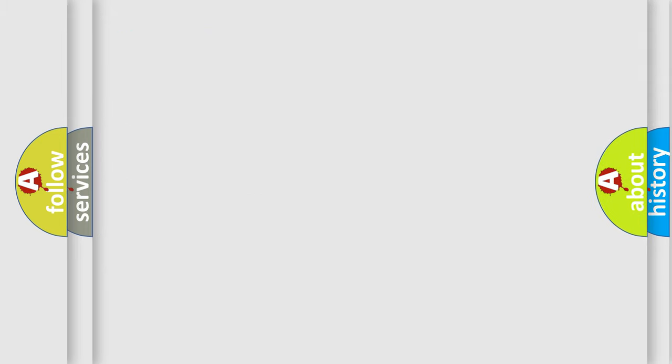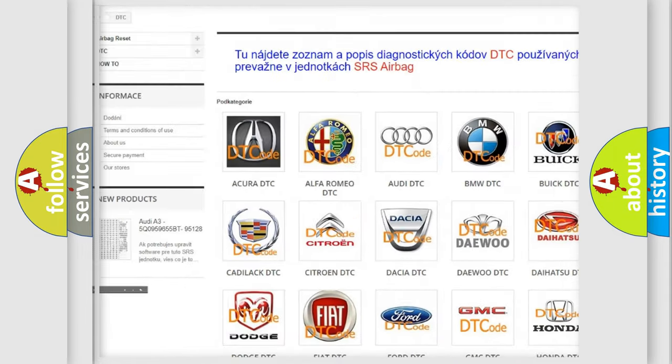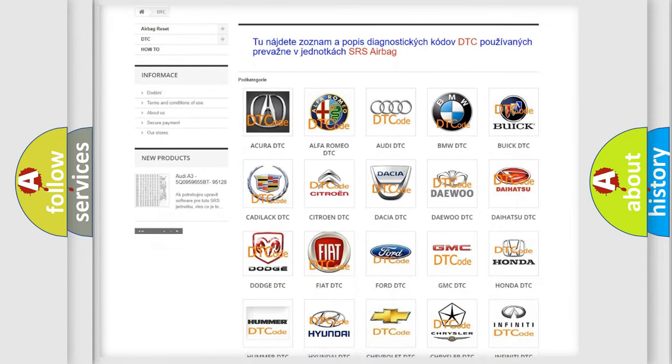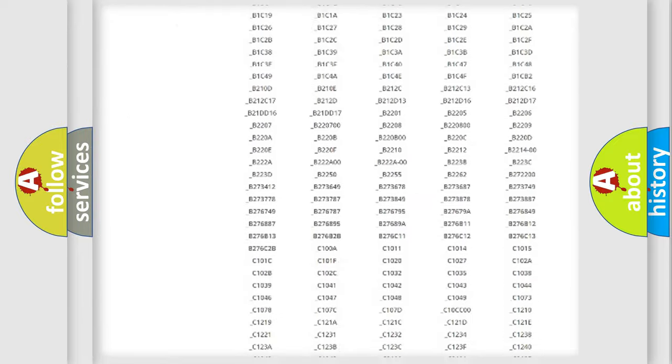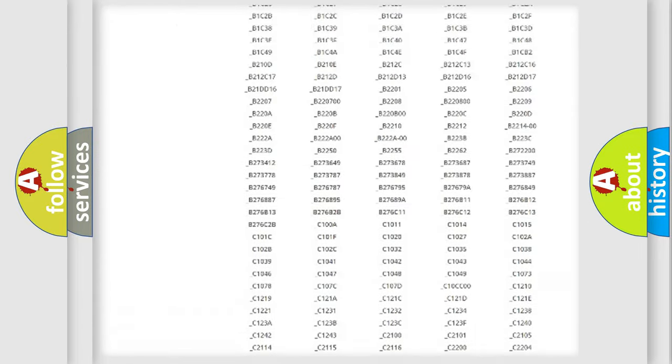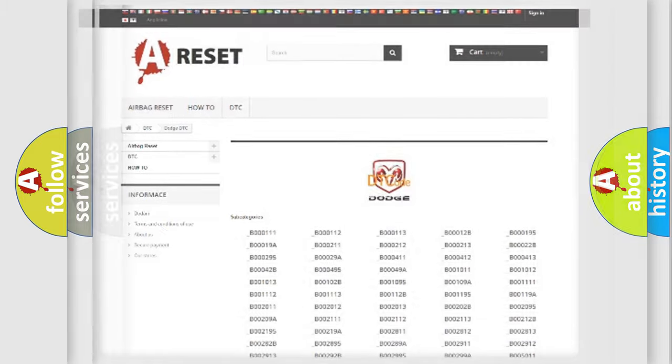Our website airbagreset.sk produces useful videos for you. You do not have to go through the OBD2 protocol anymore to know how to troubleshoot any car breakdown. You will find all the diagnostic codes that can be diagnosed in Dodge vehicles, and many other useful things.